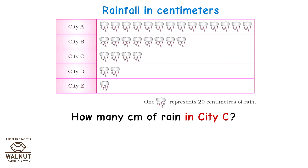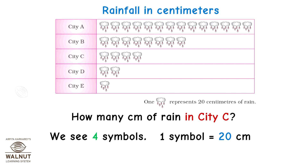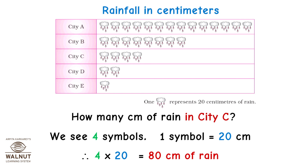How many centimetres of rain in city C? We see four symbols; one symbol is equal to 20 centimetres, therefore 4 into 20 which is equal to 80 centimetres of rain in city C.